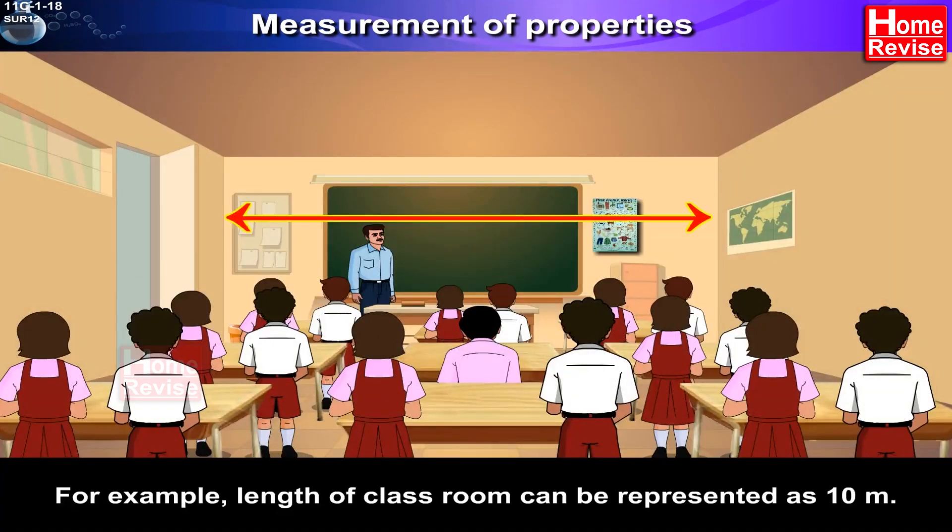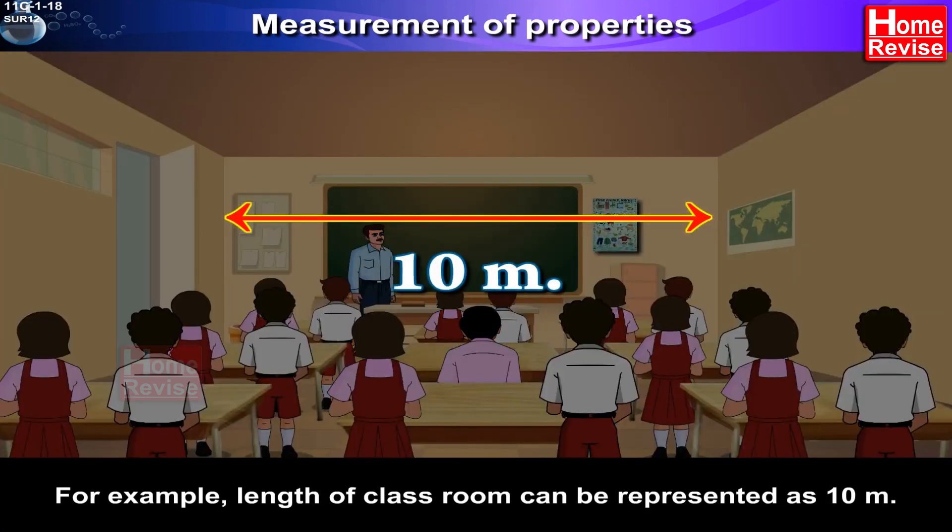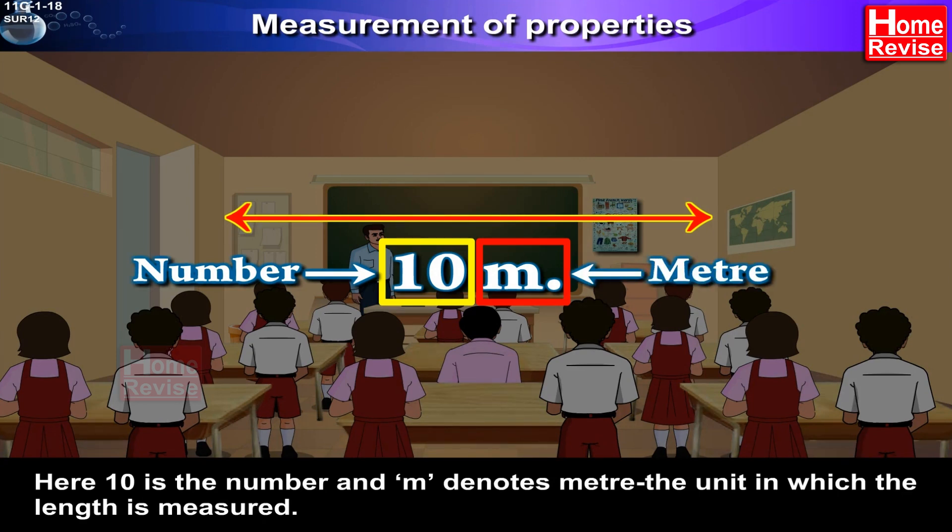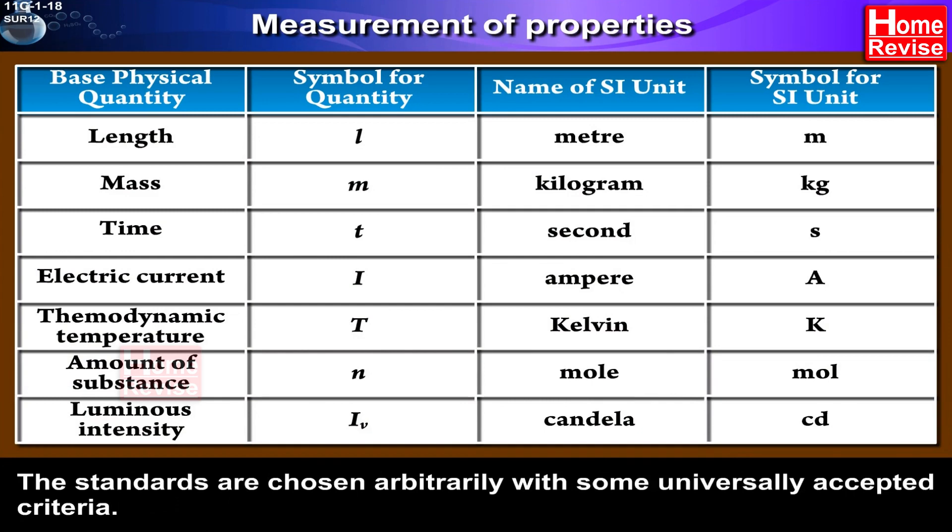For example, length of classroom can be represented as 10 meters. Here, 10 is the number and m denotes meter, the unit in which the length is measured. The standards are chosen arbitrarily with some universally accepted criteria.